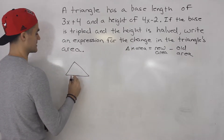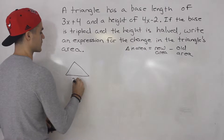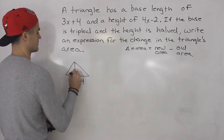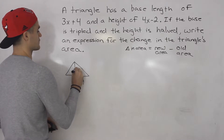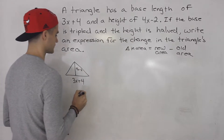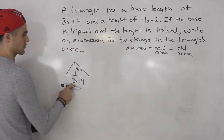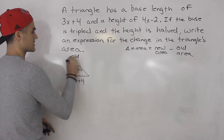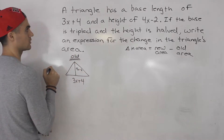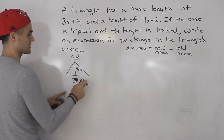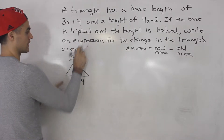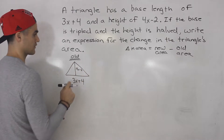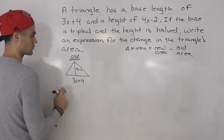We're told that the triangle has a base length of 3x plus 4 and a height of 4x minus 2. This is the original triangle. After this, we're going to triple the base and multiply the height by a half to get the new triangle. But for now let's just work with the old triangle.